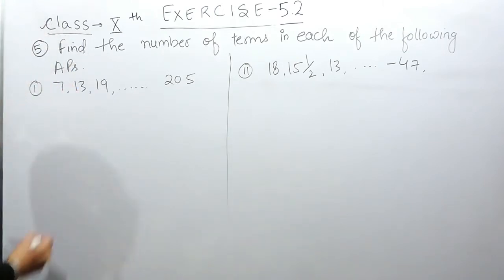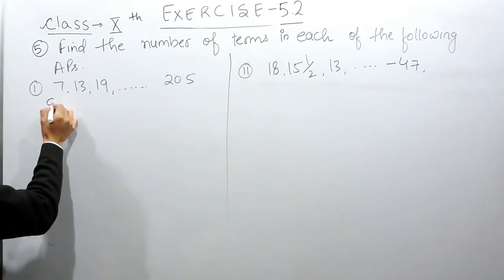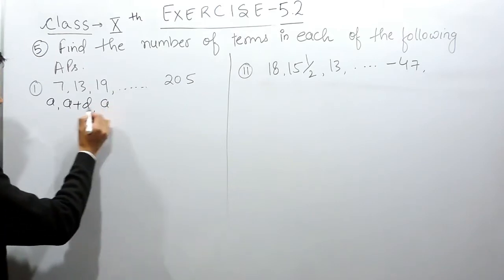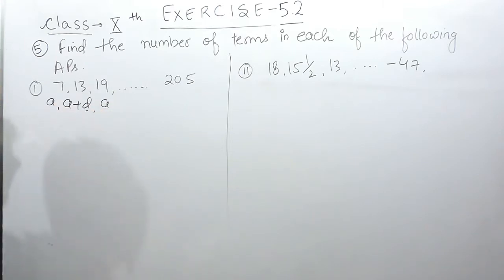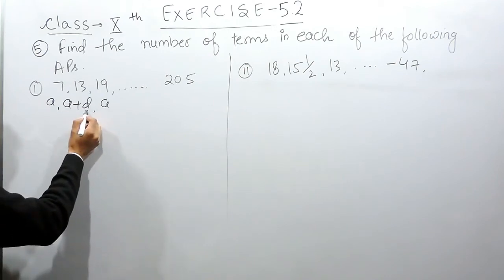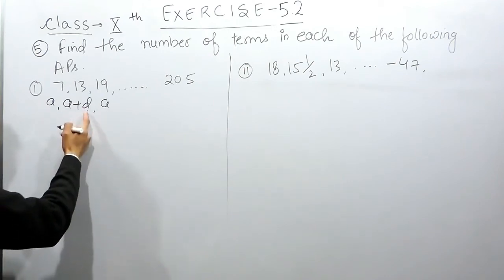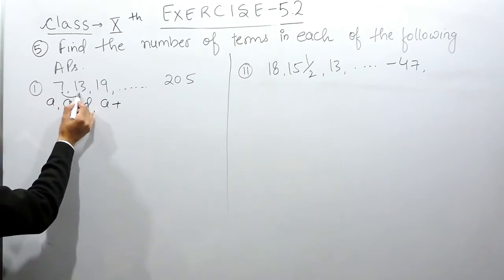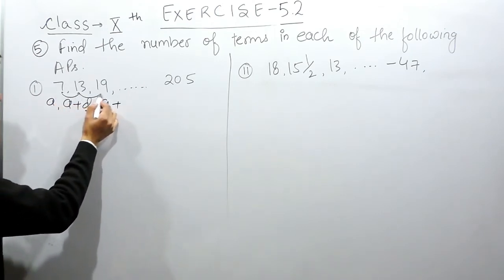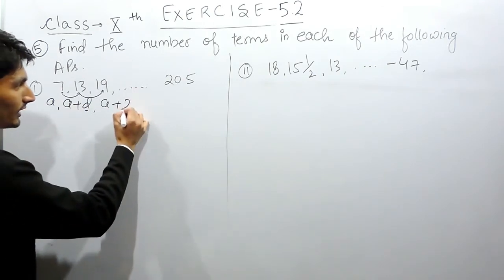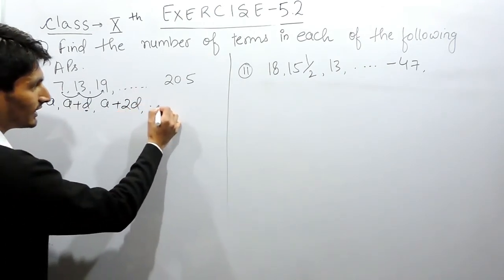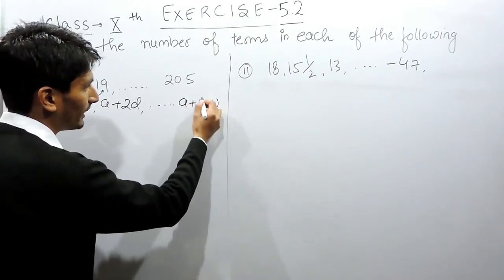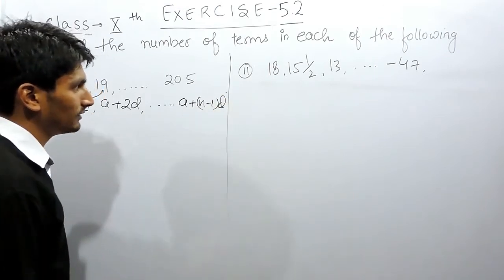We know how an AP is formed. This is the first term, and after that we have to add a constant value to it. This constant is known as the common difference. If we add a common difference to the first term to form the second term, similarly the same constant is added to form the third term. The last term is given by the formula A plus N minus 1 into D.